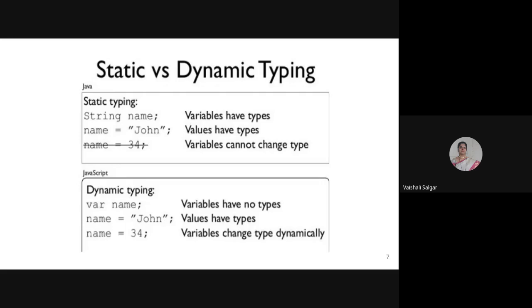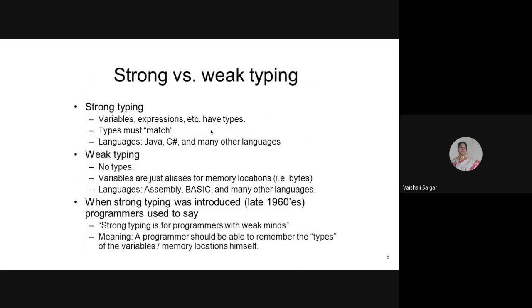In Python, if you write 'answer = 10', the variable gets type integer. But if you then write 'answer = "SyComp"', it becomes type string. At runtime, whatever data you assign to a variable, that object will be treated as that particular type. That is called dynamic typing — JavaScript and Python are dynamic typing languages.